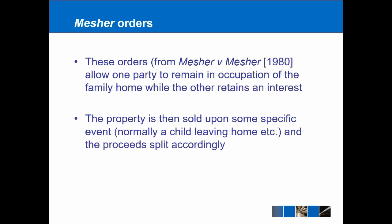Related to these property orders, we also have Mesher orders, deriving from the case of Mesher v Mesher from 1980. This basically allows one of the parties to remain in occupation of the family home while the other retains an interest. So you can imagine in situations where the matrimonial home is owned 50-50 between the husband and the wife, however the wife might be the primary caregiver and she wants to remain in occupation after the marriage ends — she would be able to do so under a Mesher order. However, say there is a child who is going to be 18 in about three or four years time — the court may decide that the property should then be sold once the child leaves home and is able to establish their own independence, at which point the proceeds can be split accordingly.